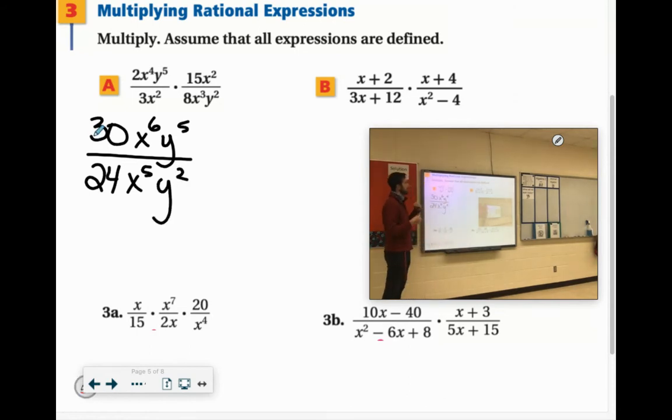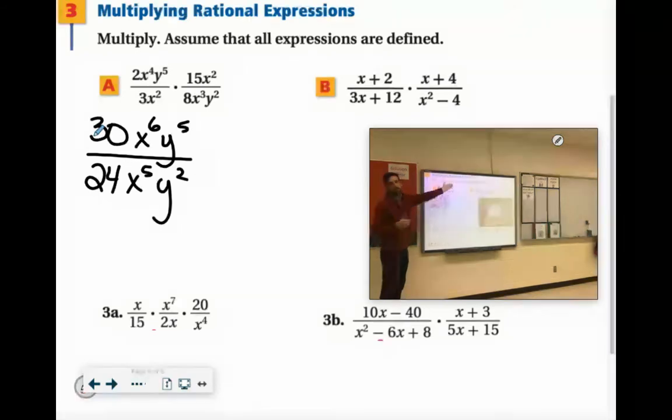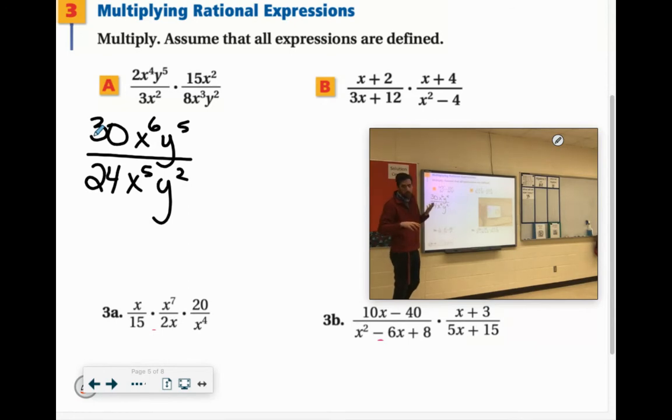It says assume that all the expressions are defined. So we don't need to do like x cannot equal 0, y cannot equal 0. Don't worry about that. 30 and 24, 6 goes into both of them. 6 goes into 30, 5 times. 6 goes into 24, 4 times.